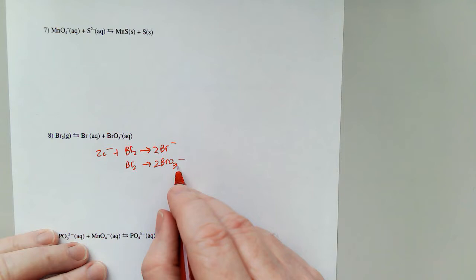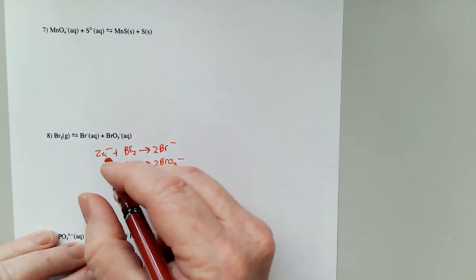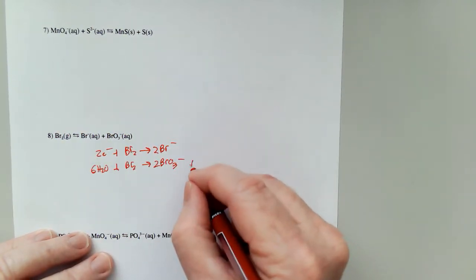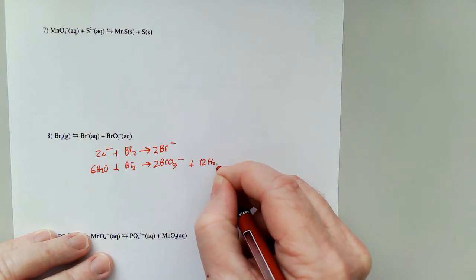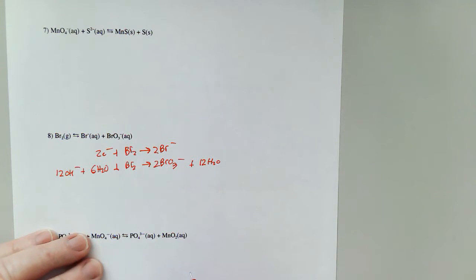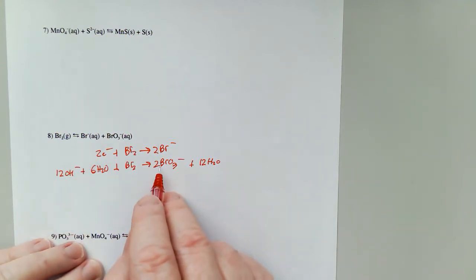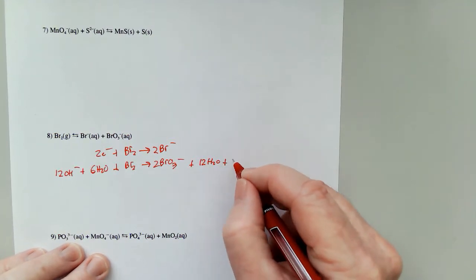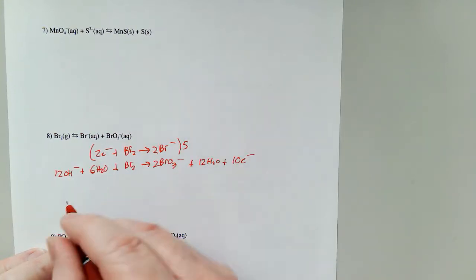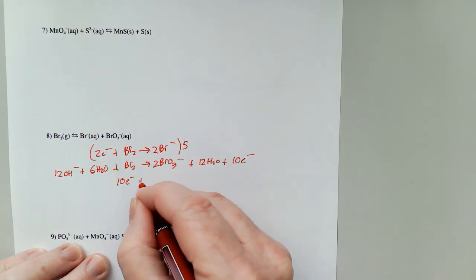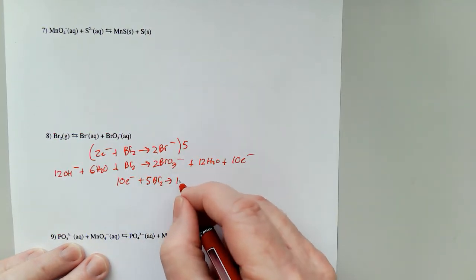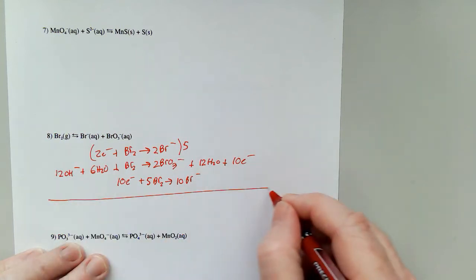Two times three is six oxygens, so with six oxygens I add six waters. Two times six is twelve, so I add twelve waters and twelve hydroxides. Twelve minus and two minus is a difference of ten, so I'm going to add ten electrons. I can multiply this by five. I've got ten electrons plus five Br₂s gives me ten Br⁻.